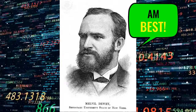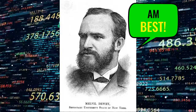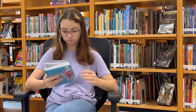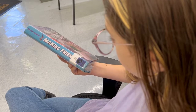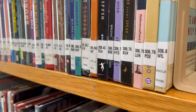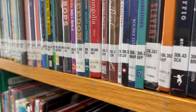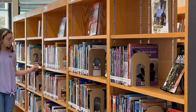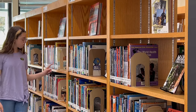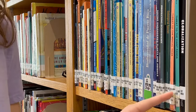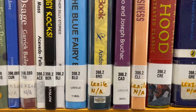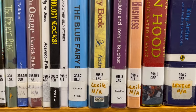The Dewey Decimal System assigns numbers to different subjects. Have you noticed that all of our nonfiction books have numbers and letters on the spine? These are a type of code for librarians. The numbers and letters together form a book's call number. In our library the call number is always three numbers or more and up to three letters. The call number is like the book's address — it tells us where the book lives in the library.